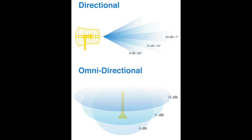Directional antennas are designed to focus a signal in a particular direction. This focused signal enables greater distances and a stronger signal between two points. The greater distances enabled by directional antennas give you a viable alternative for connecting locations such as two different offices in a point-to-point configuration. Directional antennas are also used when you need to tunnel or thread a signal through a series of obstacles, concentrating signal power in a specific direction and enabling you to use less power for greater distances than an omnidirectional antenna.